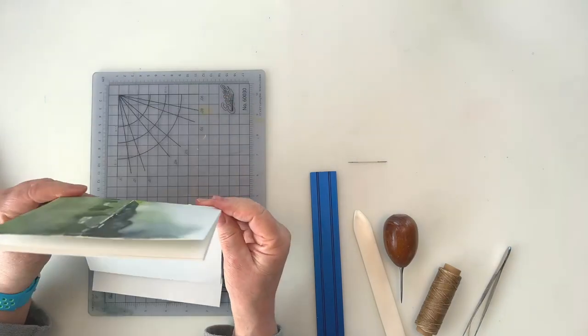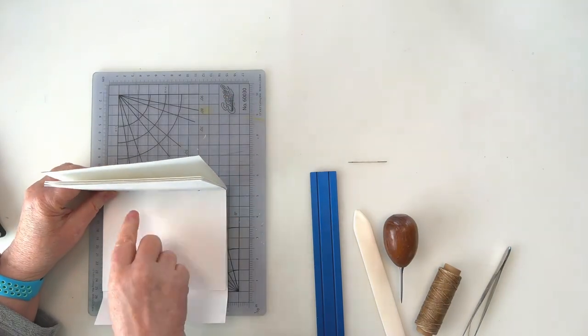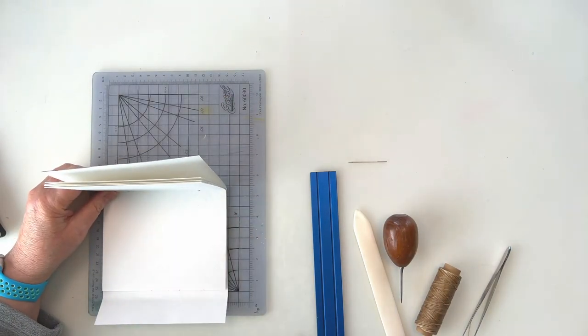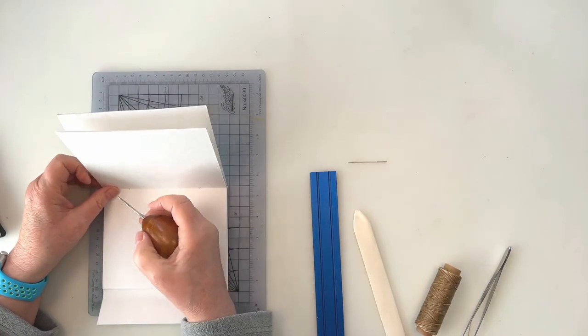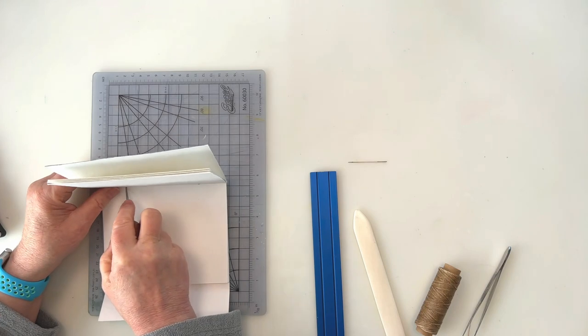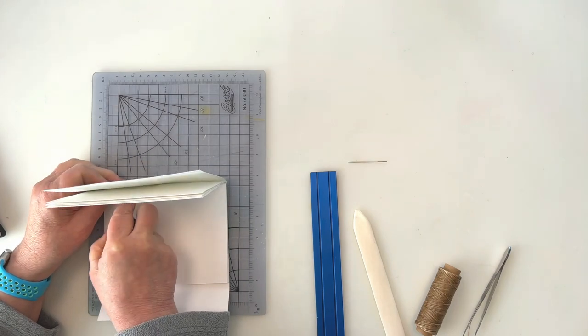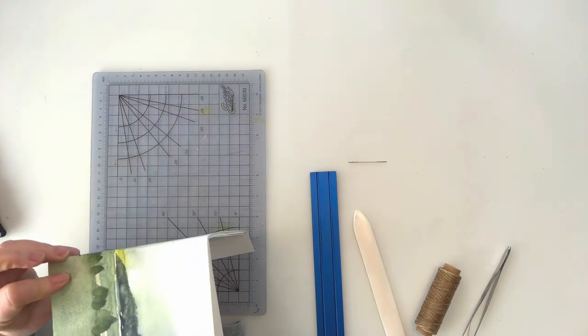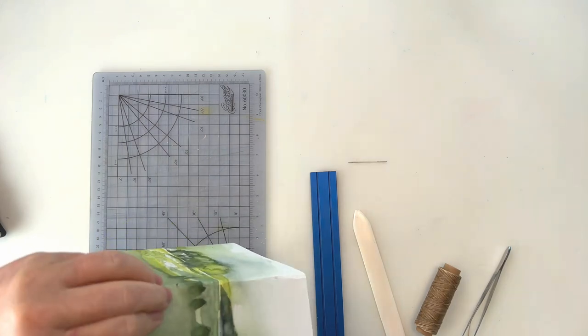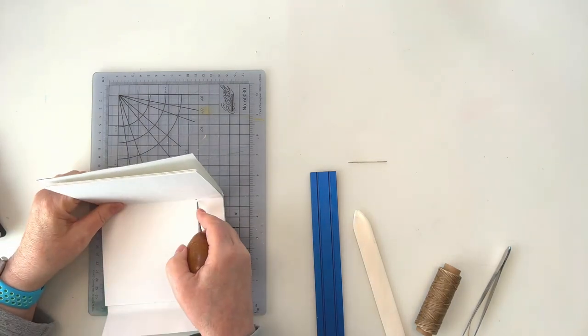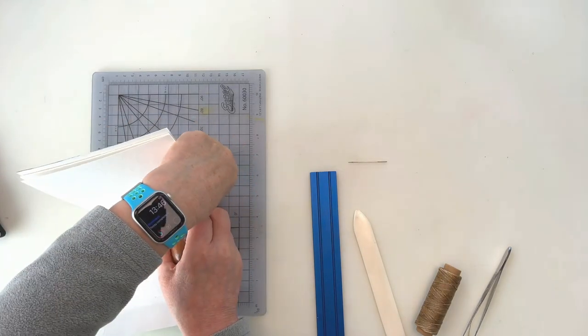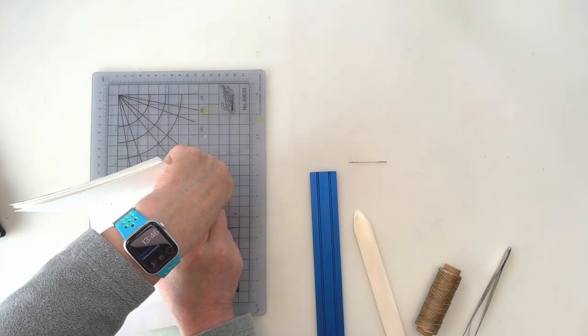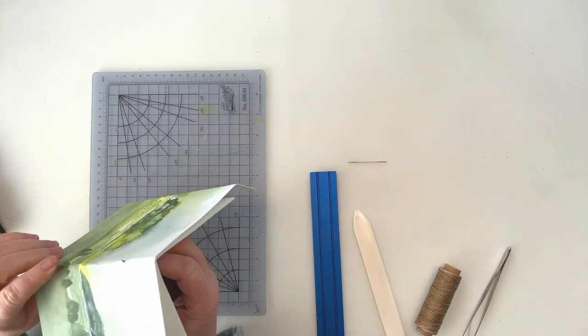I've punched two holes that go all the way through all the pages and the cover. I used an awl for this, but you could use a skewer or a darning needle or any sort of pointy object that is strong enough for you to work your way all the way through. And I just make my holes about a quarter to a third of the way down from the bottom and a quarter to a third of the way down from the top. It doesn't have to be exact.